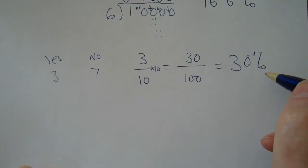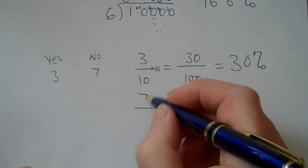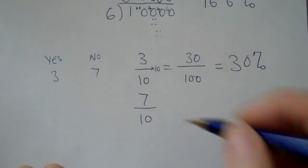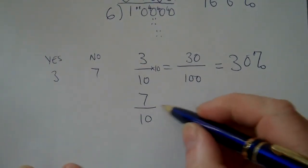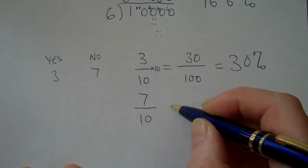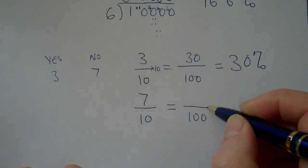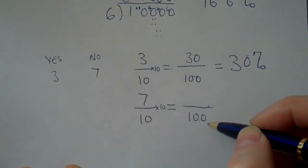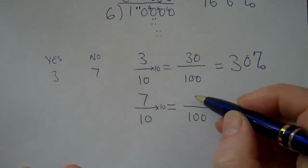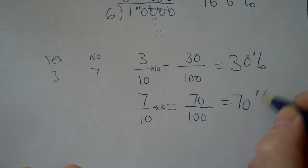What about the people that said no? Well, seven out of the ten said no. Seven out of ten people said that they didn't like Marmite. So what's that over a hundred? Again, if we just multiply by ten, ten tens are a hundred, seven tens are seventy. So seventy percent of people said they did not like Marmite.